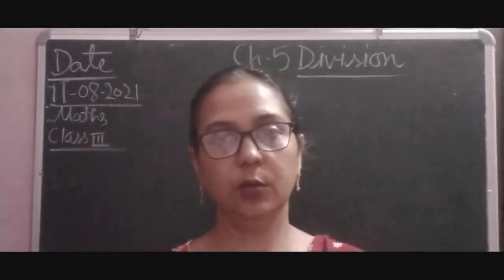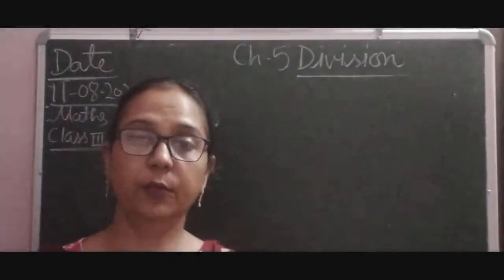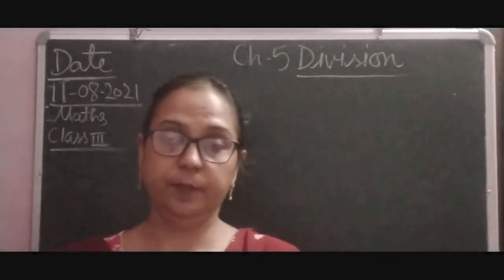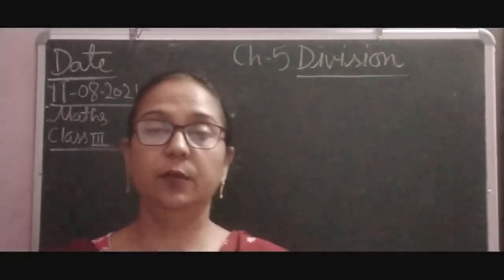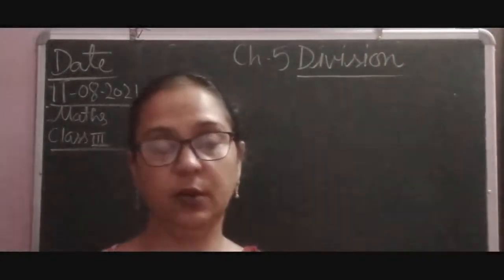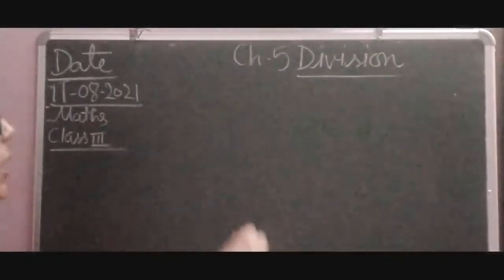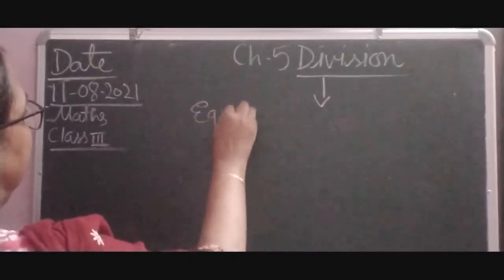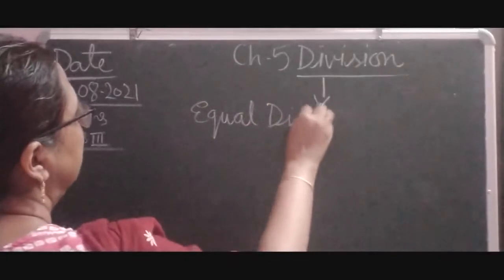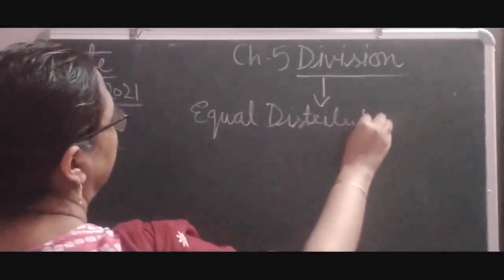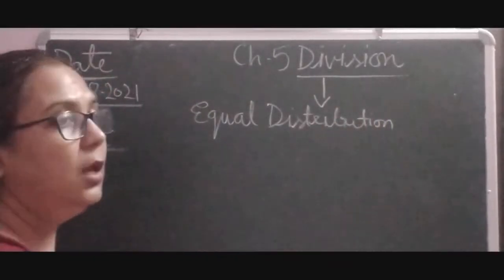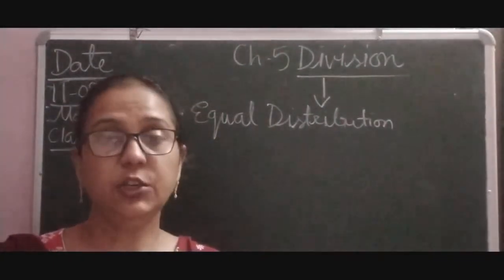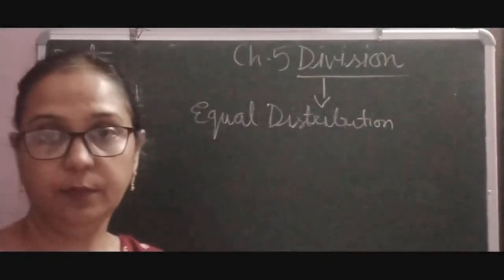In this video we are going to learn about the meaning of division and how we can divide numbers. The meaning of division is equal distribution — if we are going to distribute any object in an equal condition, that is called division.